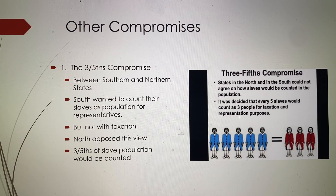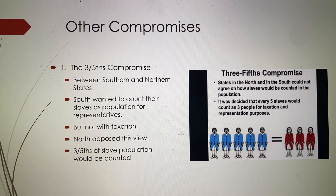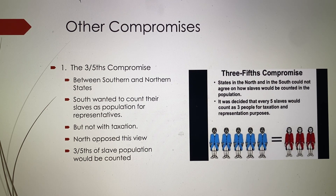They had other compromises too. There was the Three-Fifths Compromise. Now we had a problem between the northern states and the southern states. In the northern states, they didn't have slaves as they did in the southern states. The southern states wanted to count their slave population to have more representatives, but they didn't want to count their slaves when being taxed, because they didn't want to be taxed heavily on their people.